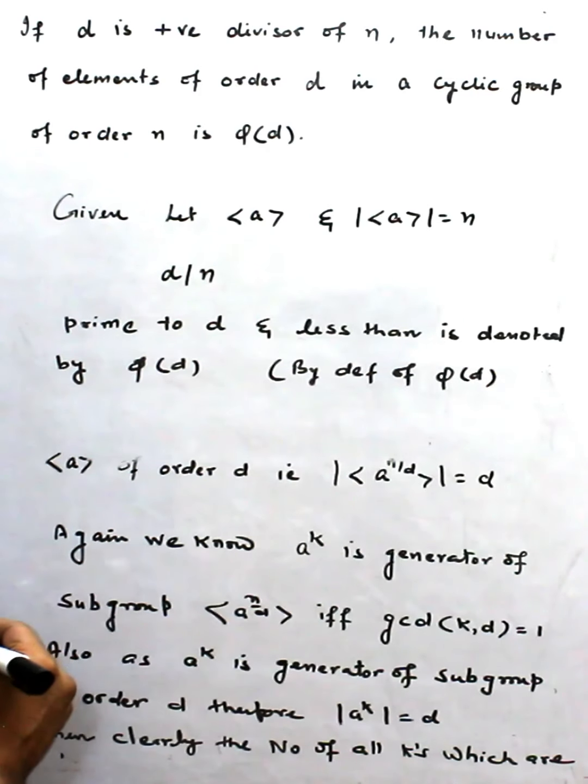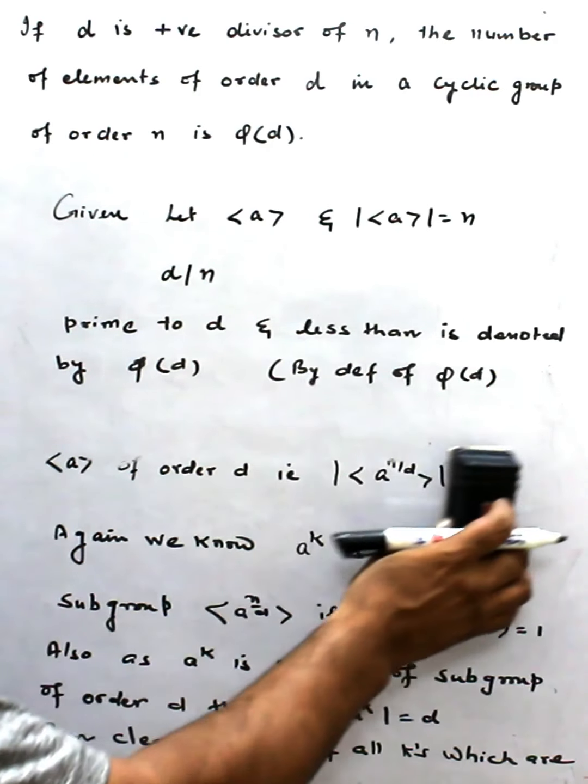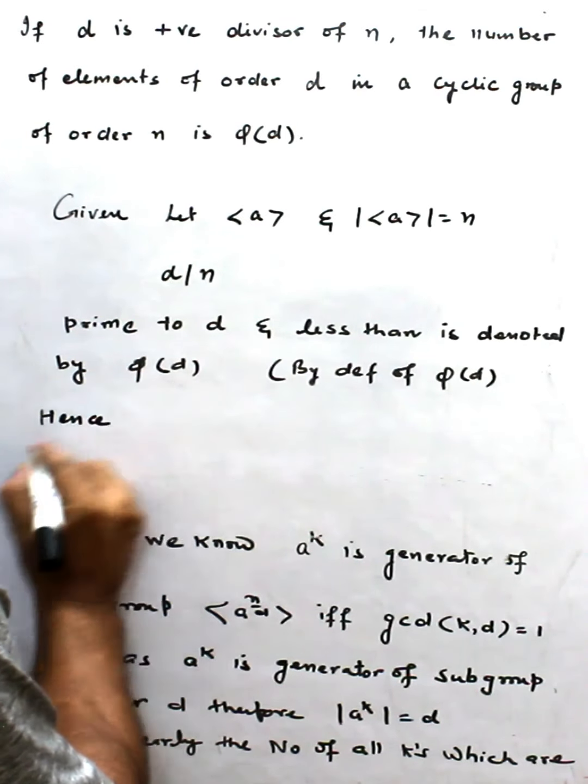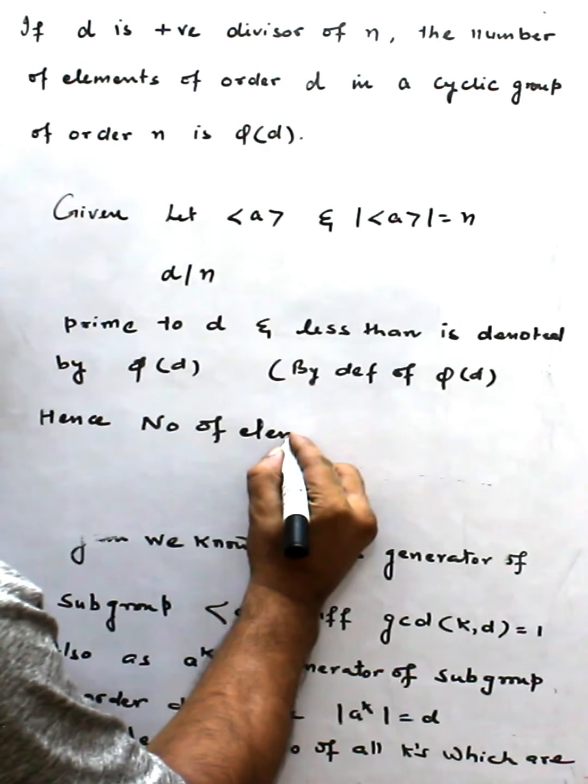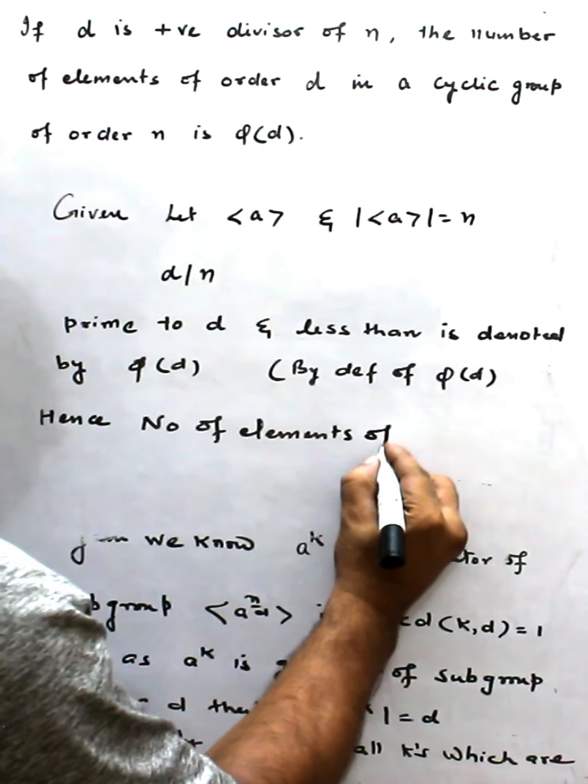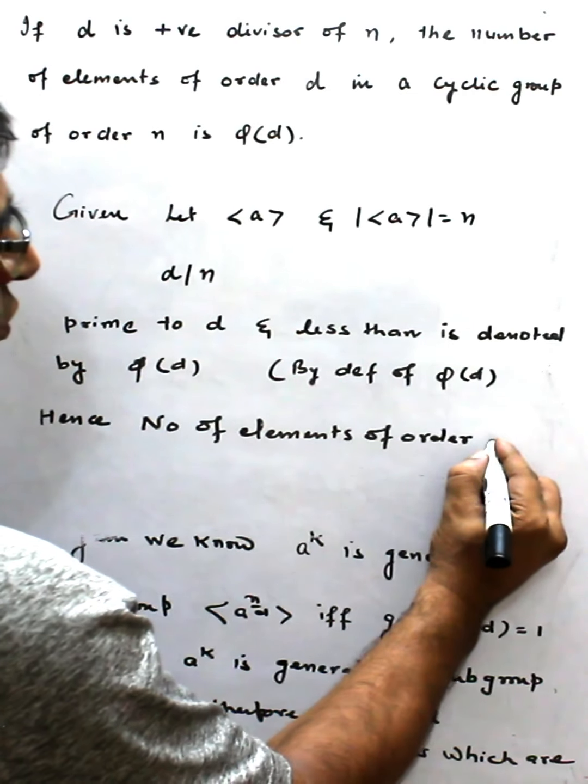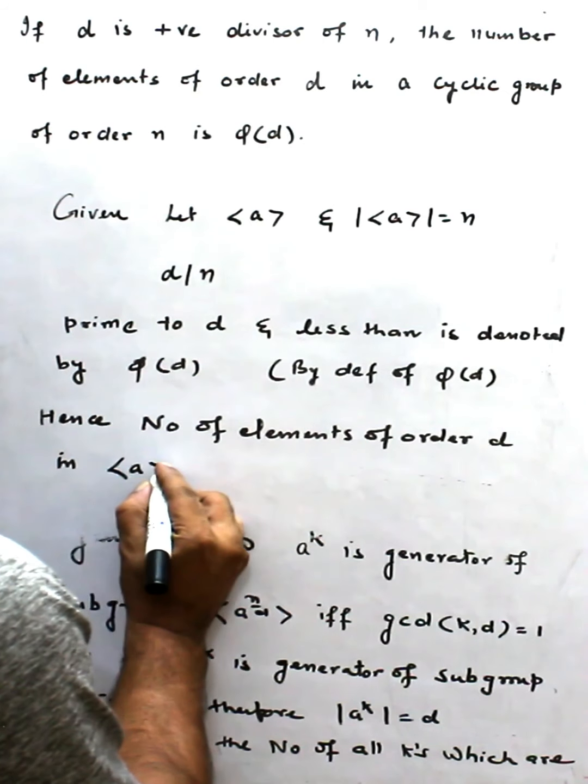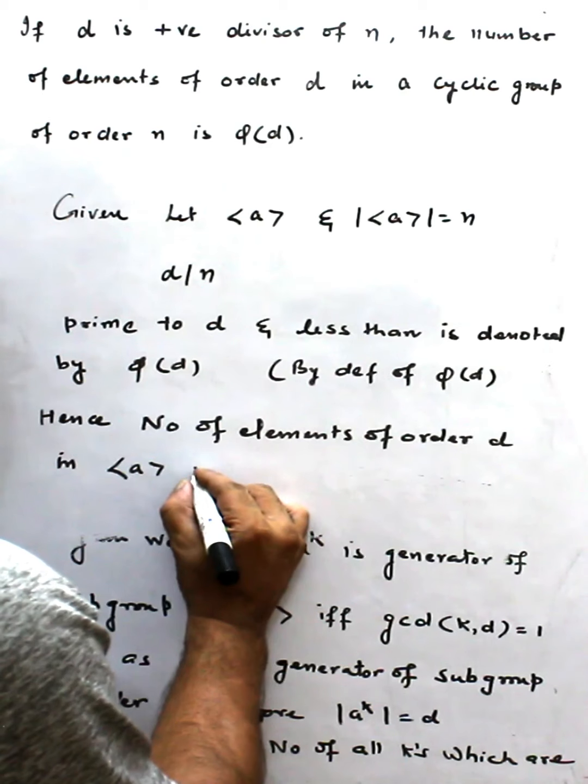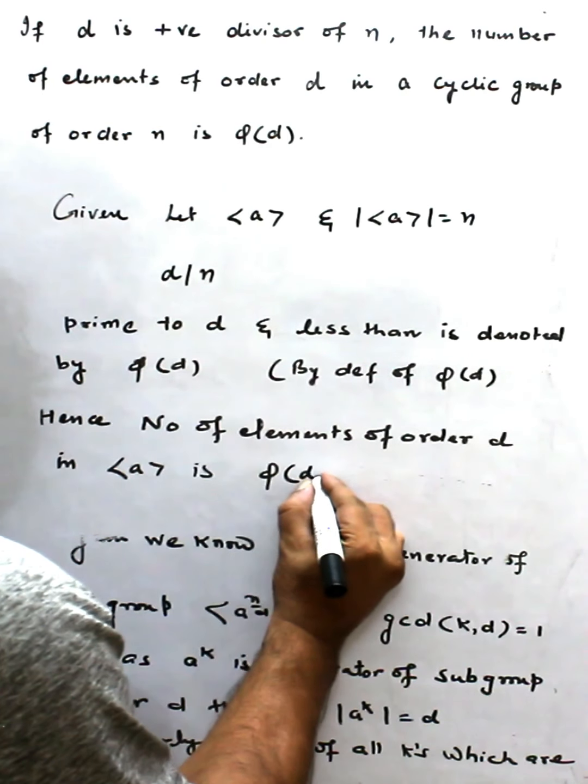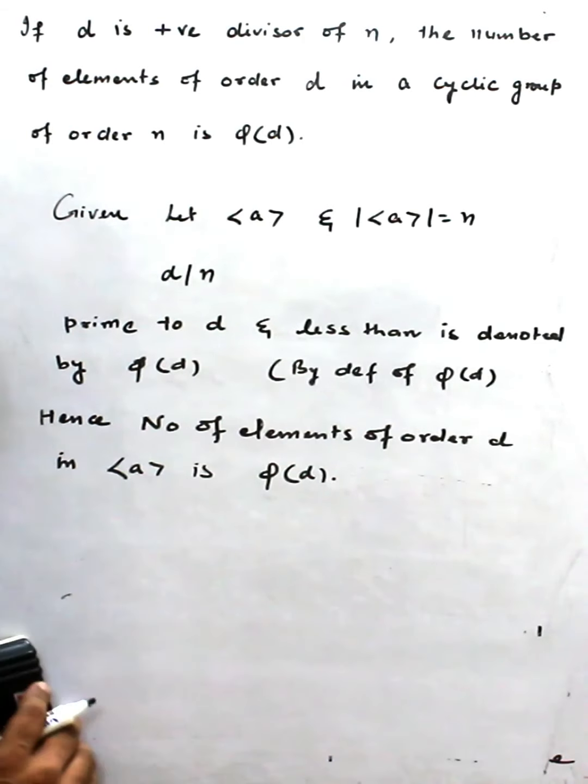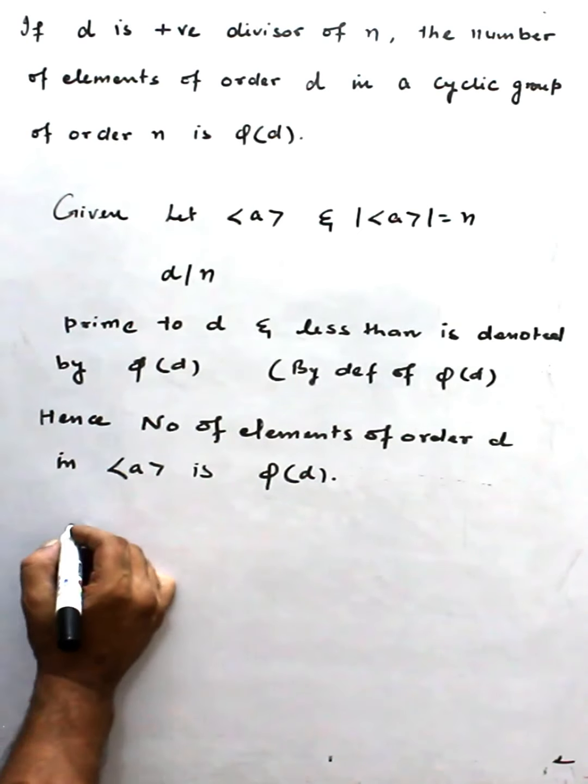Hence, we can say the number of elements of order d in <a> is φ(d). This is the proof of the theorem. Hence proved.